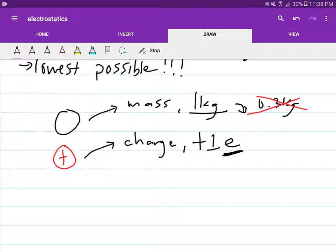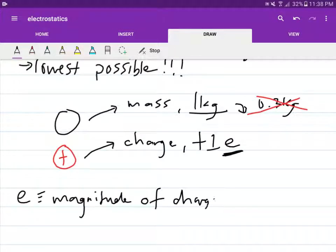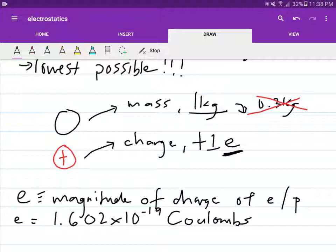For protons, the smallest possible charge it can have is positive 1e. So what is this e? E is actually the magnitude of the charge of electrons or protons. So it has a value of 1.602 times 10 to the minus 19, and its unit is in coulombs. So this is the smallest possible value that a charge can have.